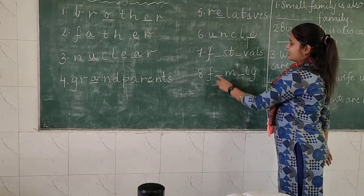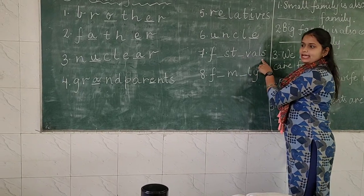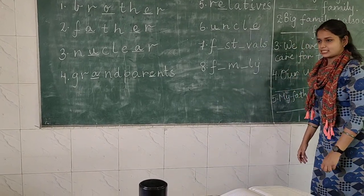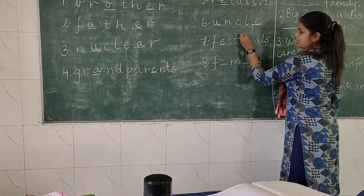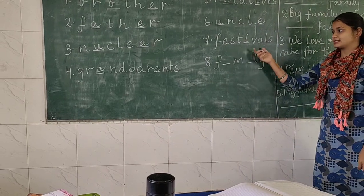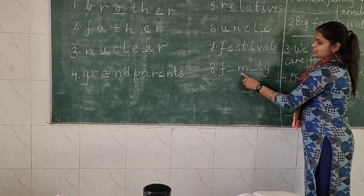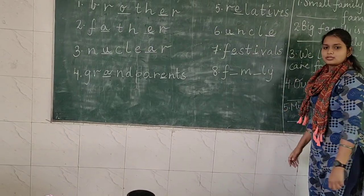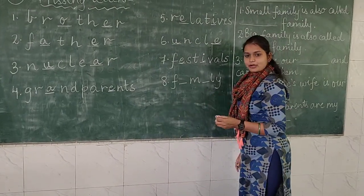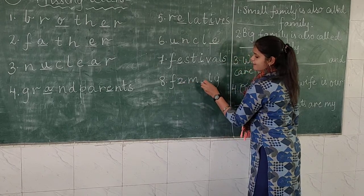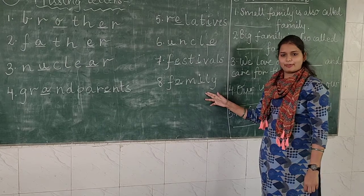Now the seventh word: F-dash-S-T-dash-V-A-L-S. This word is 'festivals'. The correct spelling is F-E-S-T-I-V-A-L-S. And now the last, eighth word: F-dash-M-dash-L-Y. This is 'family'. The correct spelling is F-A-M-I-L-Y.